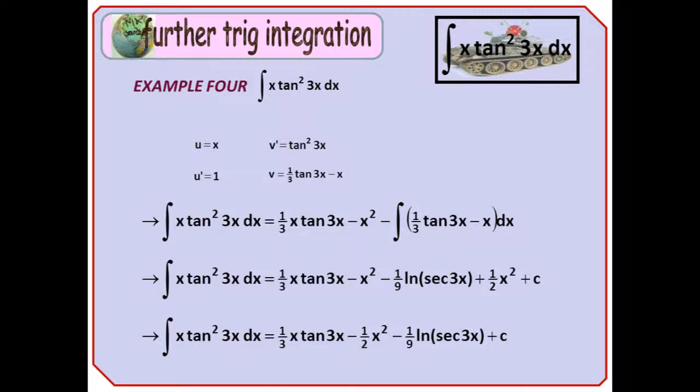We do u v, which is a third x tan 3x minus x squared, and subtract the integral of a third tan 3x minus x. The integral of a third tan 3x is a ninth ln sec 3x, and the rest is basic. Note that we end up with two terms in x squared, so we can simplify them. And we need to add c truly.